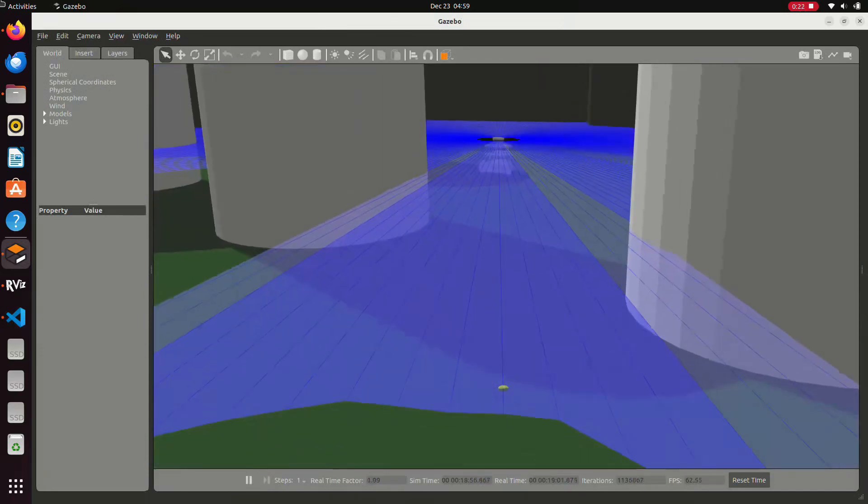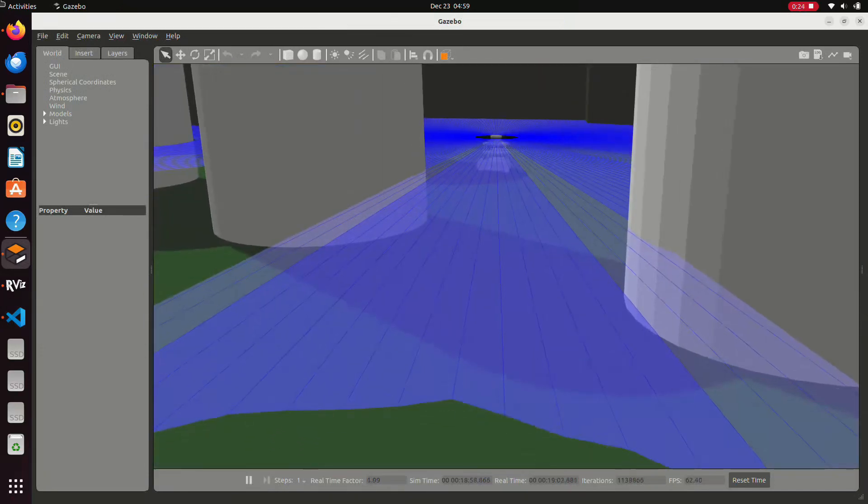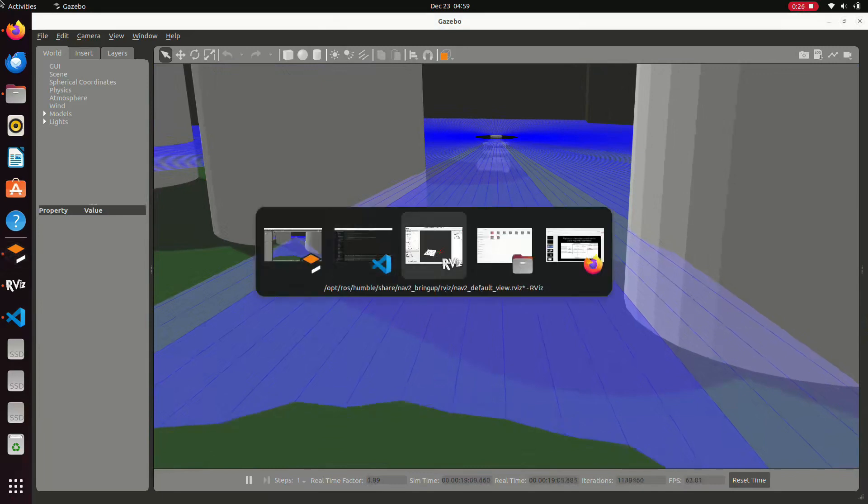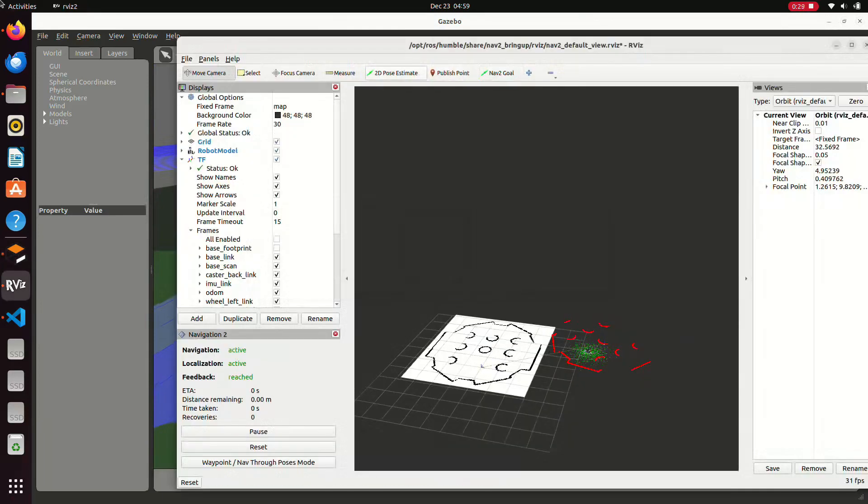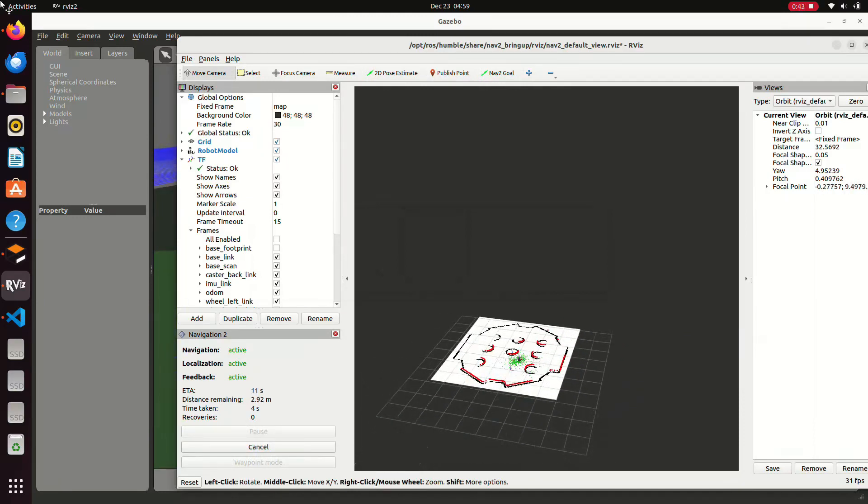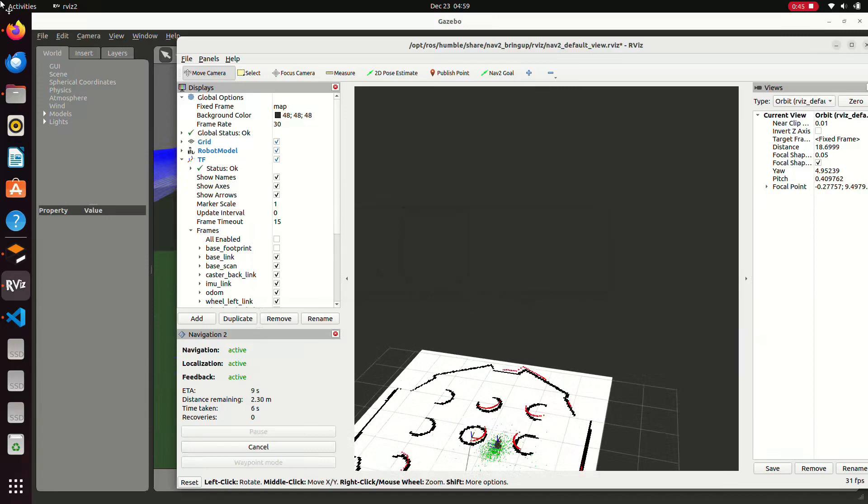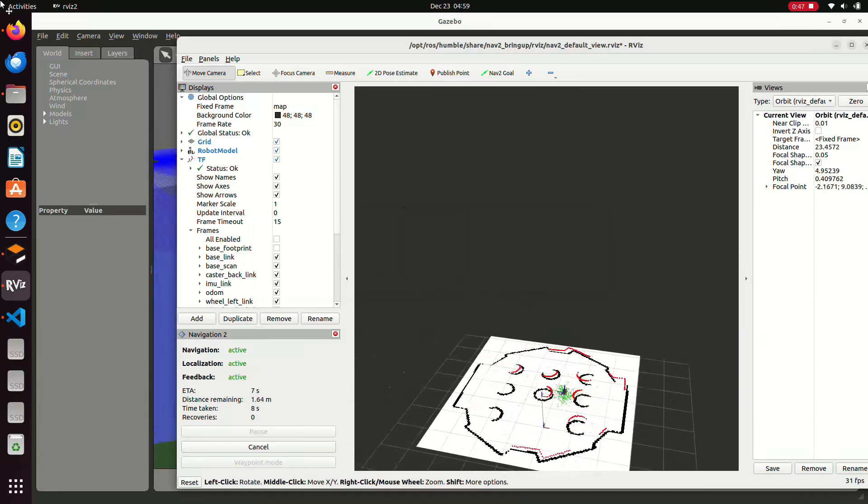So when the robot starts, it doesn't know where it is in the map. But as it moves, the localization algorithm will keep trying to correct the odom frame so we can accurately understand where we are on the map and thereby the world. As you can see, the laser data is slowly matching the map and now is able to navigate through the map without any problems.